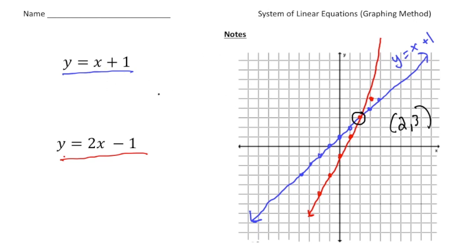Because that's the point where they overlap, that should be a solution to the system. Let's check it. We're saying x is 2 and y is 3. If I plug in 2 for x: 2 plus 1 gives you 3. And if I plug in 2 for x in the second equation: 2 times 2 is 4, and 4 minus 1 gives you 3. So it works.